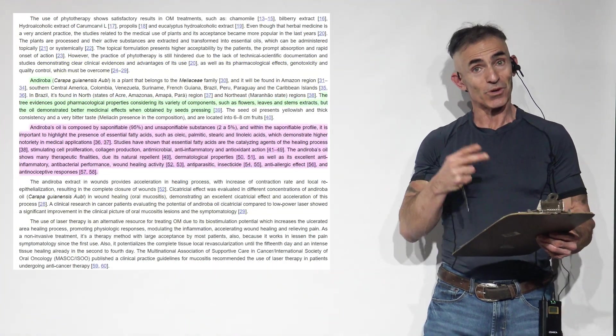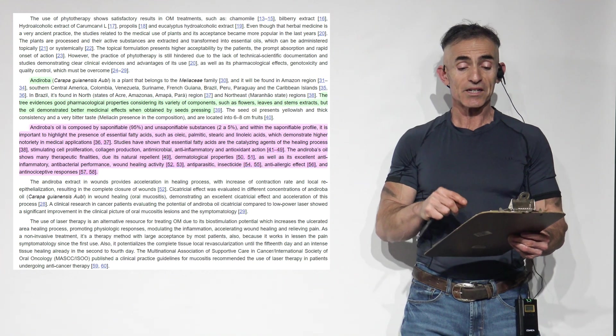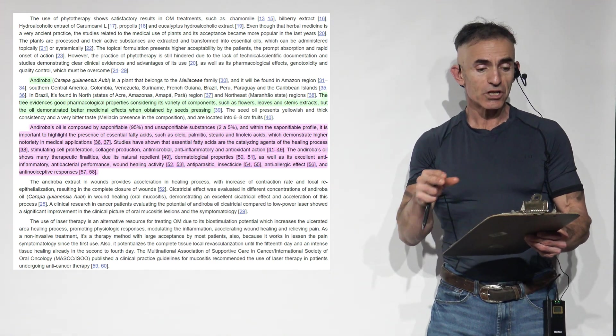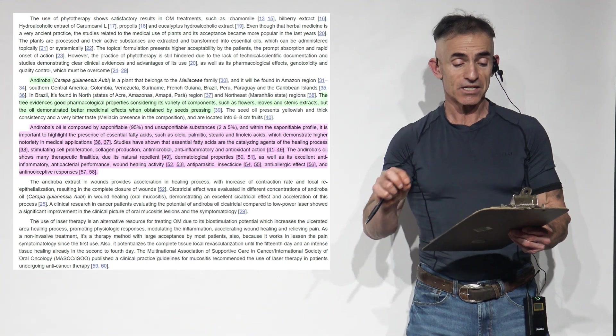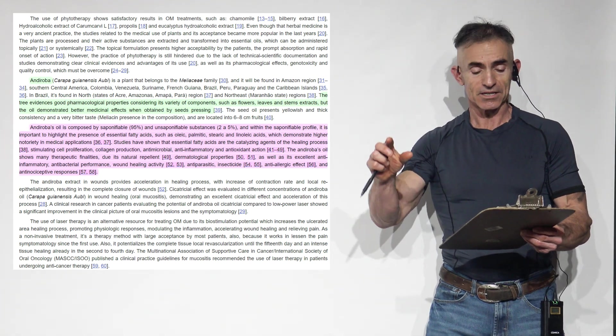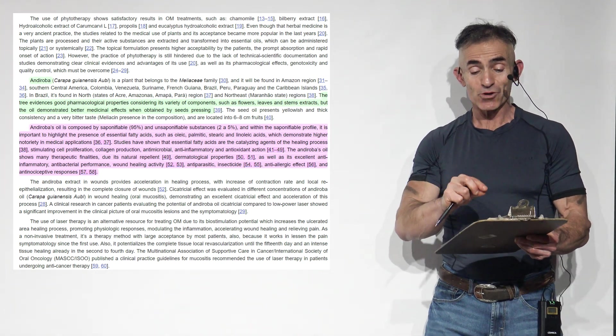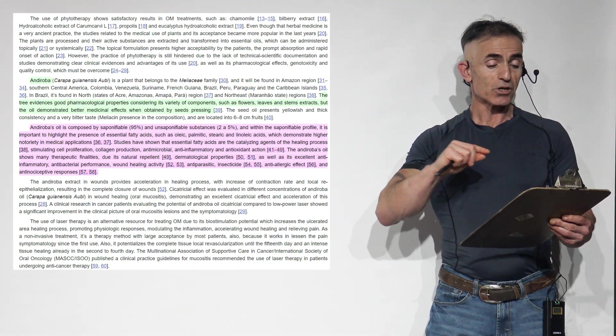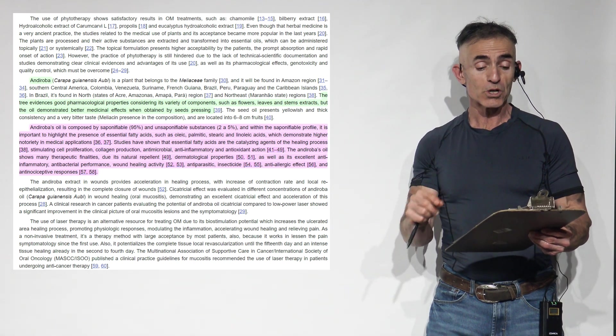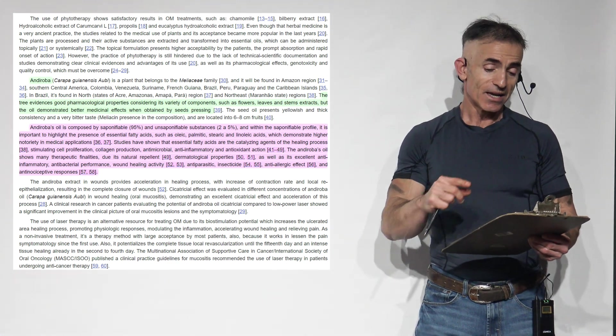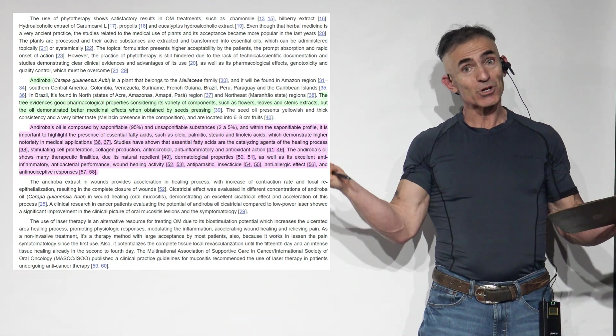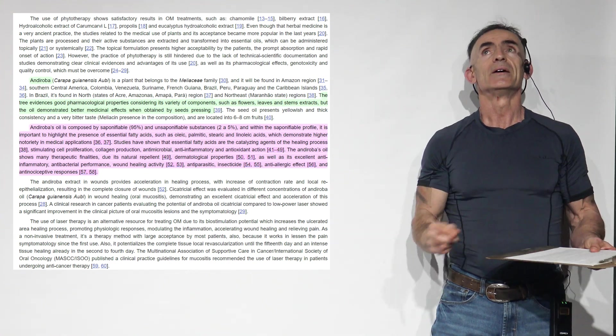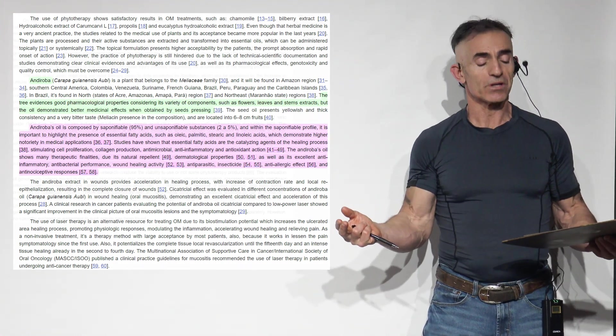To speak English, what does that mean? Studies have shown that the essential fatty acids are the catalyzing agents in the healing process, stimulating cell proliferation, collagen production, antimicrobial, anti-inflammatory, and antioxidant action. The Andiroba oil shows many therapeutic finalities due to its natural repellent - Andiroba oil is used as a bug repellent in many parts of the world on top of that. Dermatological properties, as well as excellent anti-inflammatory, antibacterial performance, wound healing activity, anti-parasitic - for people with ringworms and things like that, be curious. Insecticide, anti-allergic effect, and antinociceptive, which means it's basically pain reduction responses.